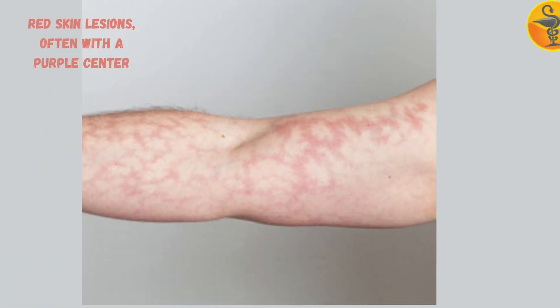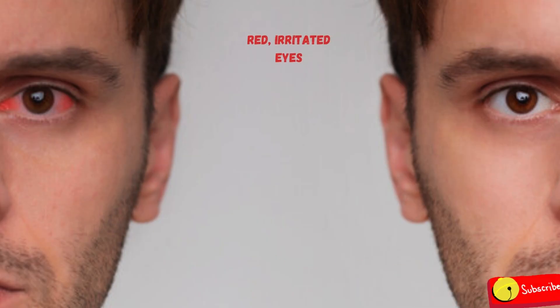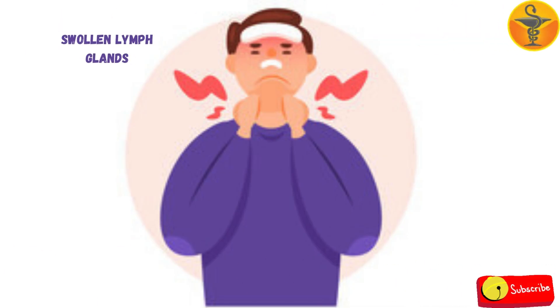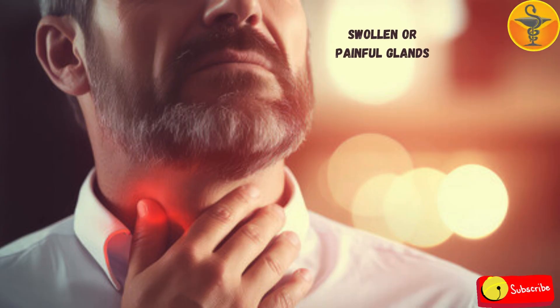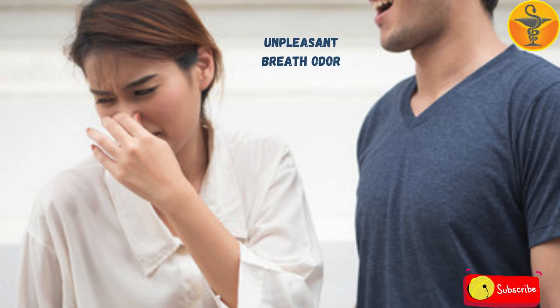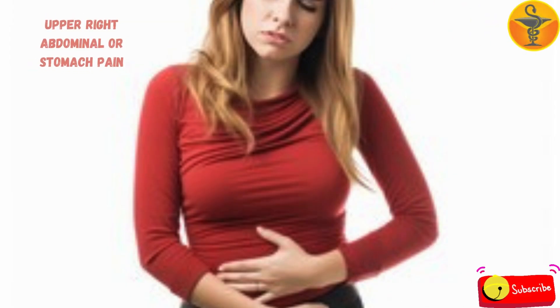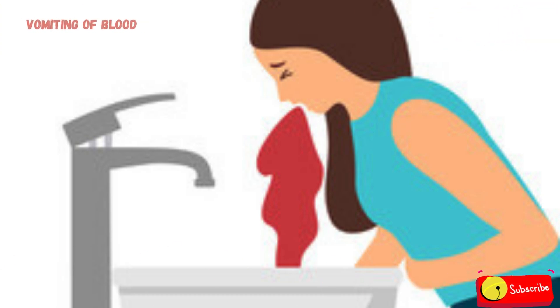Red skin lesions often with a purple center, red irritated eyes, seizures, swollen lymph glands, swollen or painful glands, unpleasant breath odor, upper right abdominal or stomach pain, vomiting of blood.